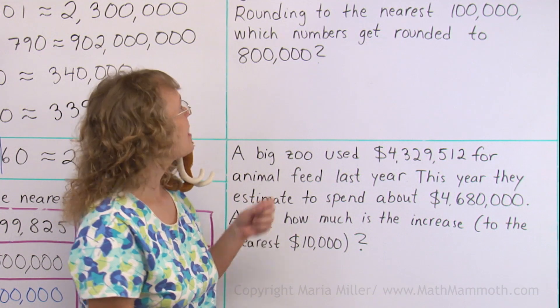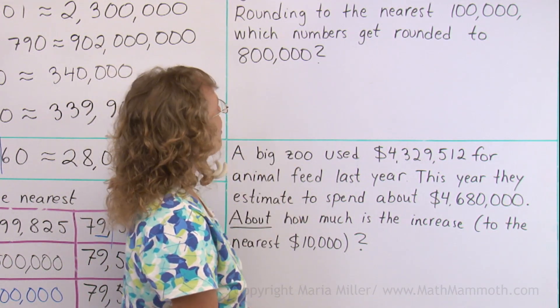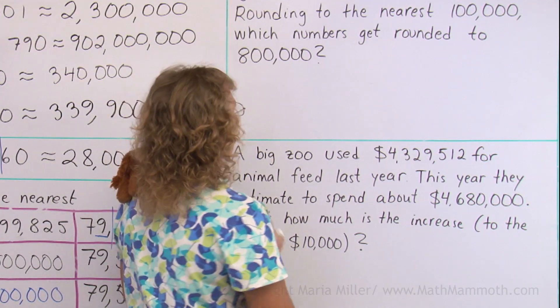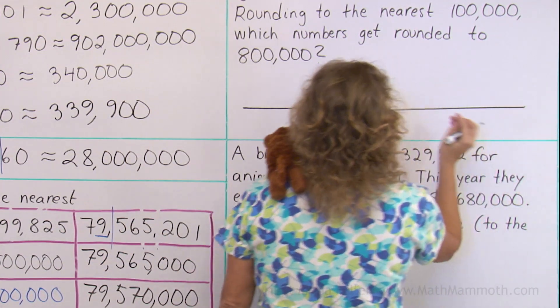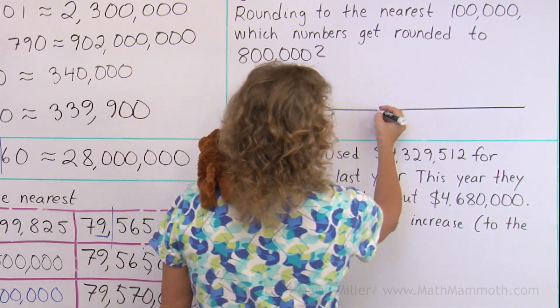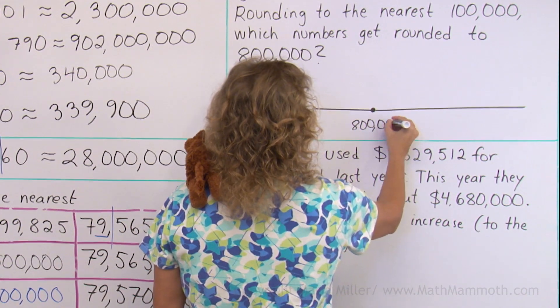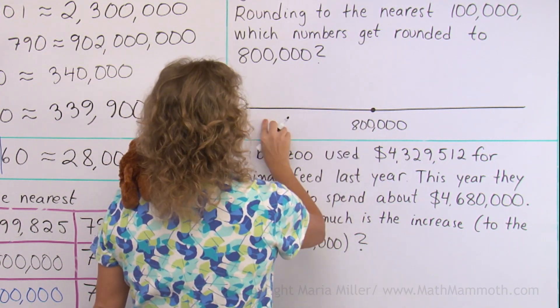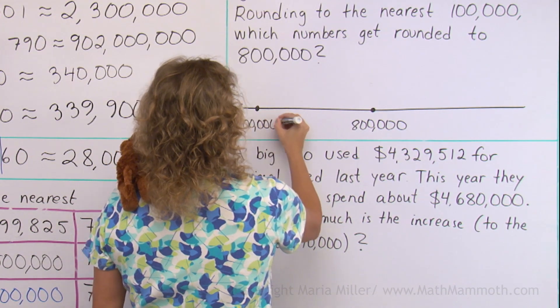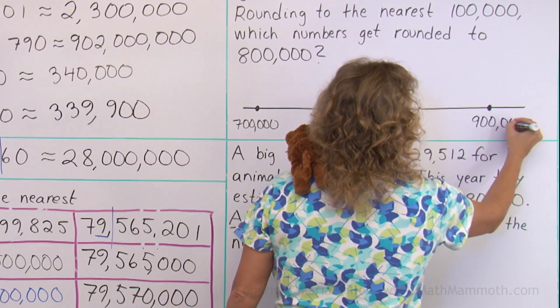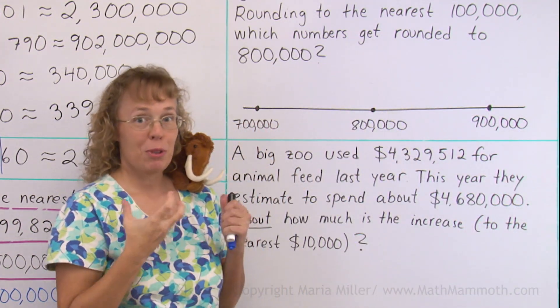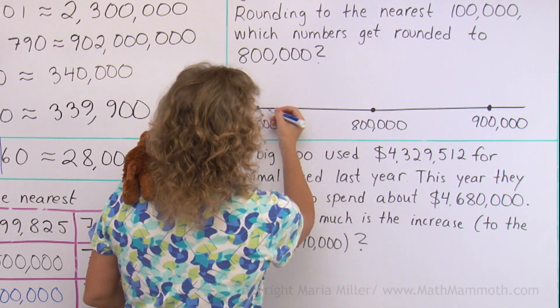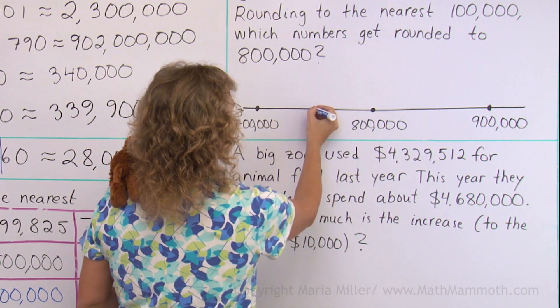Now, over here in this problem, it says, rounding to the nearest 100,000. Which numbers get rounded to 800,000? I'm gonna solve this using a number line. And since we are thinking of rounding to 800,000, I'm gonna put that number here in the middle. 800,000. And we are rounding to the nearest 100,000, so I'm gonna put the previous 100,000 here, which is 700,000. And then 900,000 somewhere here. Does that help you tell what numbers are rounded to 800,000? We know that the middle number, the middle 5, as you remember, is always rounded up.